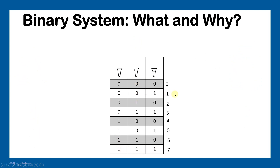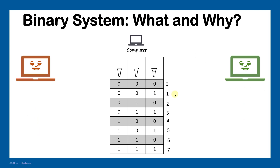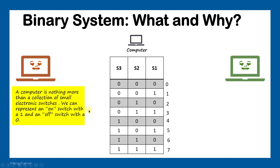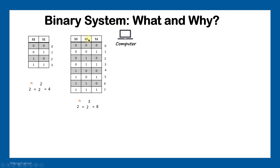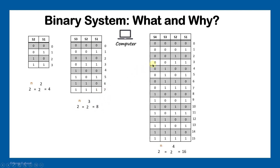This system is well suited for computers because computers can represent on and off using switches. You can consider a computer as a collection of switches — if the switch is on it represents one, if it's off it represents zero. With three switches we have those combinations, and we can extend easily. The number of combinations follows the rule: two to the power of the number of switches. With two switches we get four combinations, with three switches we get eight, and with four switches we get sixteen — representing numbers from zero to fifteen.